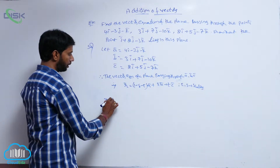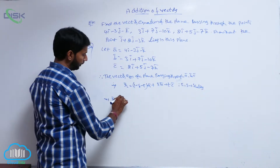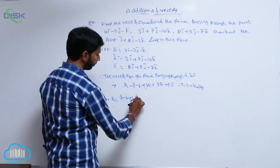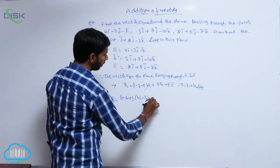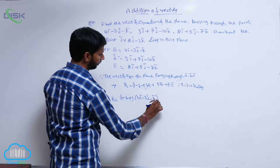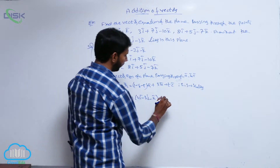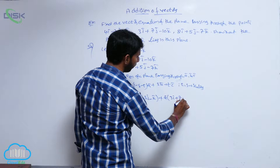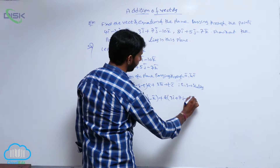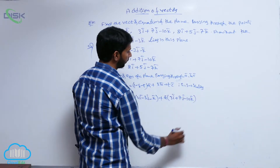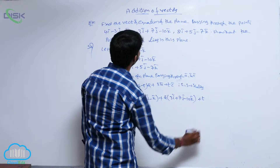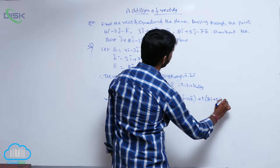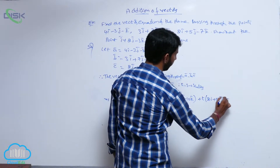That implies r̄ = (1 - s - t)(4î - 3ĵ - k̂) + s(3î + 7ĵ - 10k̂) + t(2î + 5ĵ - 7k̂).